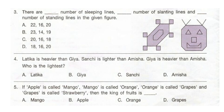Question 5: If apple is called mango, mango is called orange, orange is called grapes, and grapes is called strawberry, then what is the king of fruits? The correct answer is option C, orange. Because the king of fruits is mango, and mango is called orange.